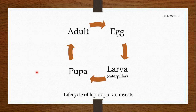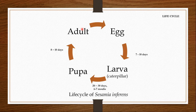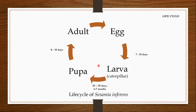In the life cycle of Lepidopteran insects, there are four stages: adult, egg, larva, and pupa. The females lay eggs after mating and the eggs hatch into larvae, in this case called caterpillars. Once the larva matures it will pupate, and from the pupa the adult will eclose. In Sesamia inferens, the egg takes about 7 to 10 days to hatch. The larva takes 20 to 30 days to mature and moults 6 to 7 times. The pupa takes 8 to 10 days to mature into the adult stage. The whole life cycle takes about 40 to 70 days.